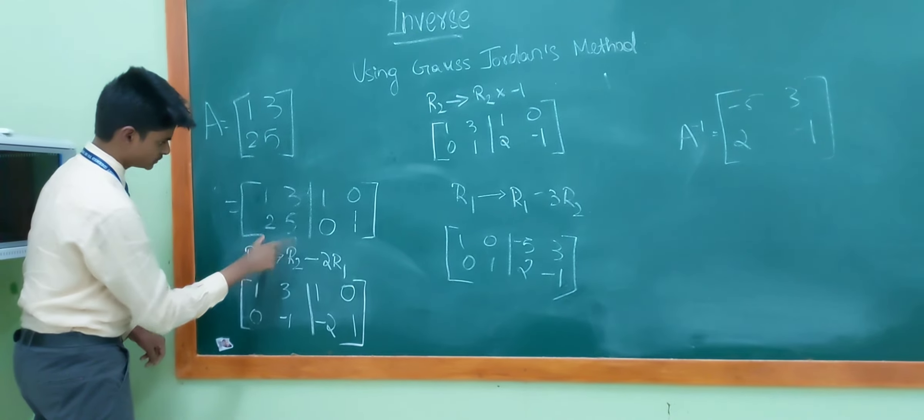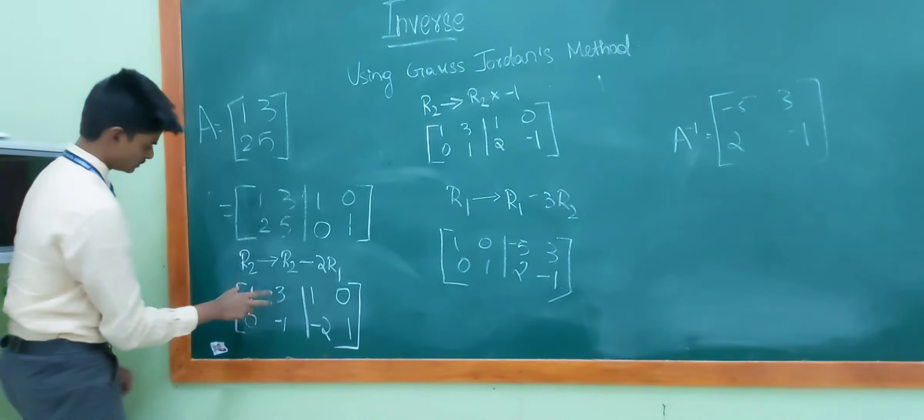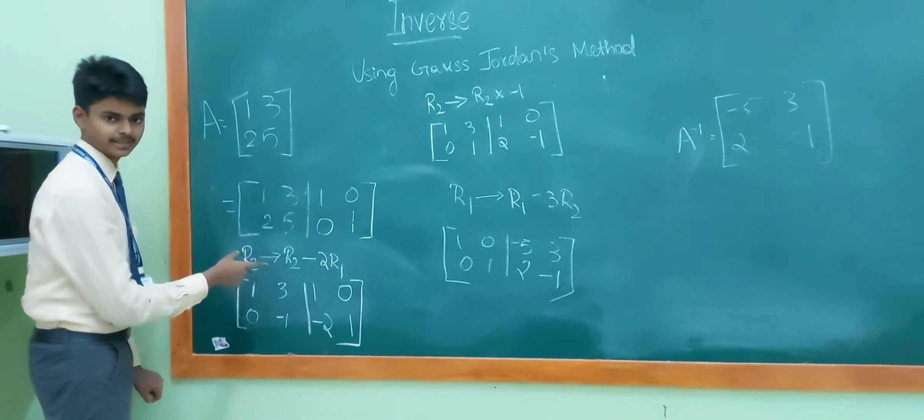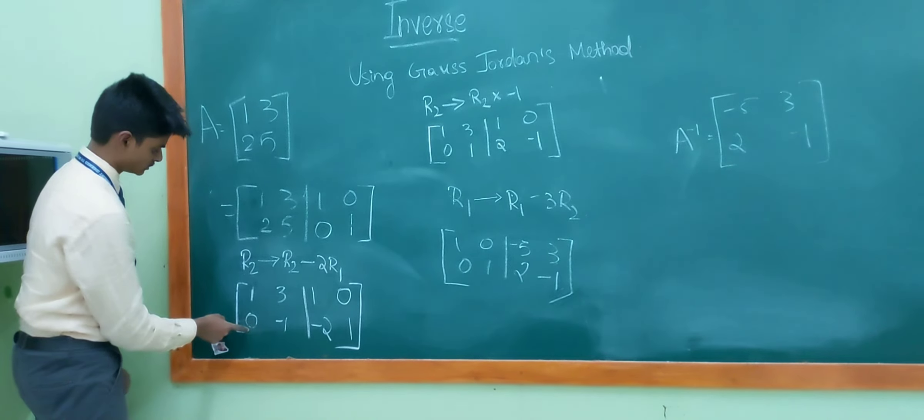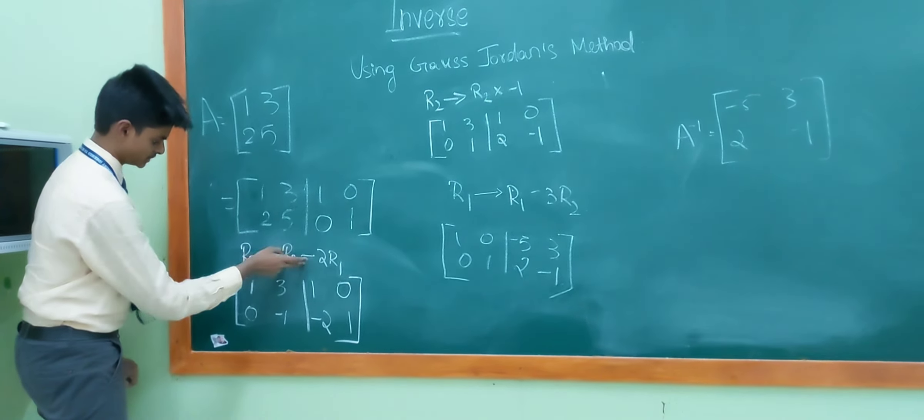Now, we use some row operations to convert this 1, 3, 2, 5 into 1, 0, 0, 1. As the first element in the first row is 1, we don't need to apply any row operations. So, we will go to the second row. That is 2. We will convert it to 0 by using the row operations.